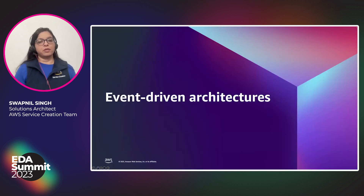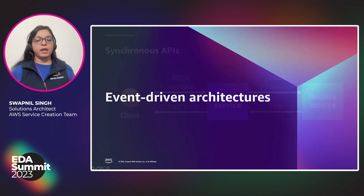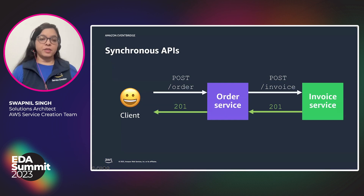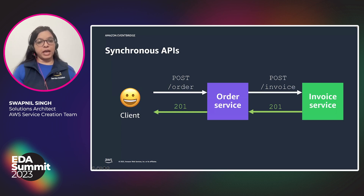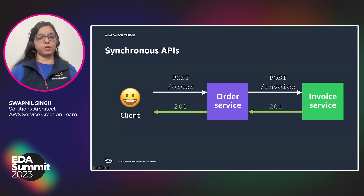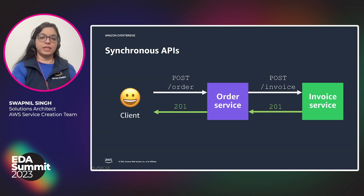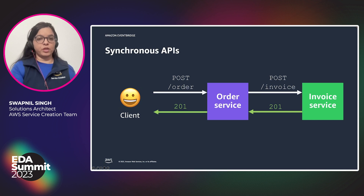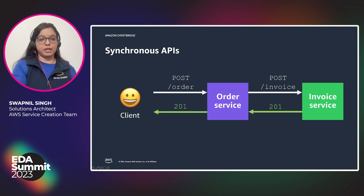Let's first talk about what problem event-driven architectures are trying to solve. With a synchronous API, the client makes a call to an order service, and the order service makes a consecutive call to an invoice service. Once the invoice service responds back with the data, the order service sends a response back to the client. The data exchange happens between order service and invoice service synchronously back to the client, and this works in most cases — error handling is taken care of by the order service.